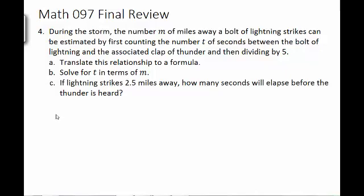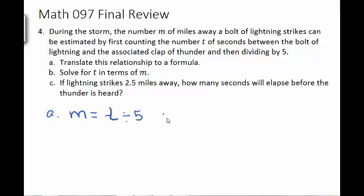Number 4: During a storm, the number m of miles away a lightning bolt strikes can be estimated by first counting the number t of seconds between the bolt of lightning and the associated clap of thunder, and then dividing by 5. So the first step is to translate this into a relationship. We have the number of miles — anytime you see 'can be,' 'would be,' or 'is,' that indicates an equal sign. We count the number of seconds and divide by 5, so m equals t over 5.